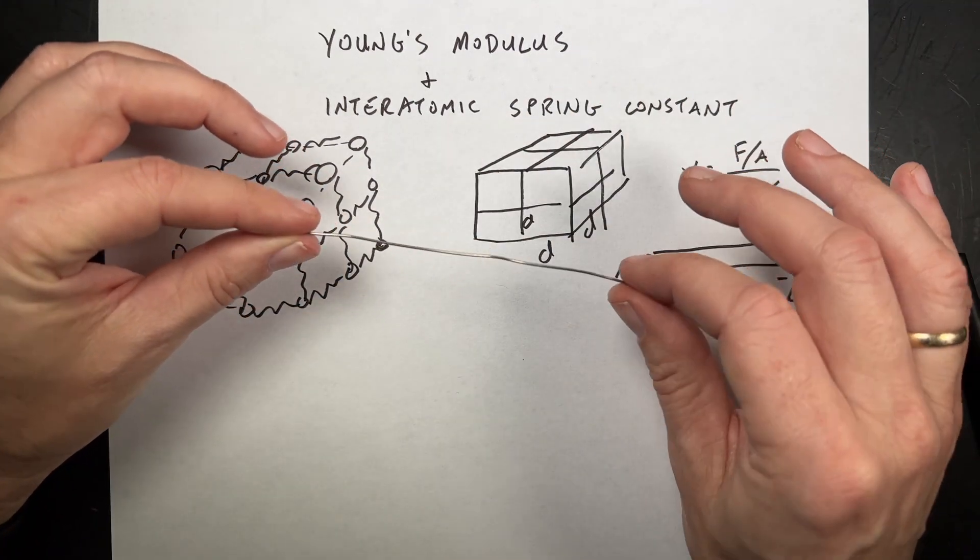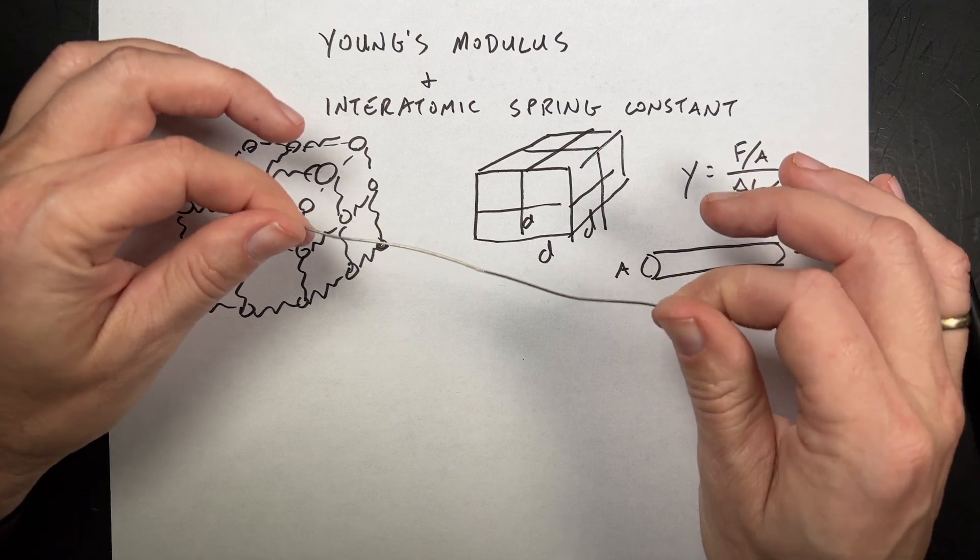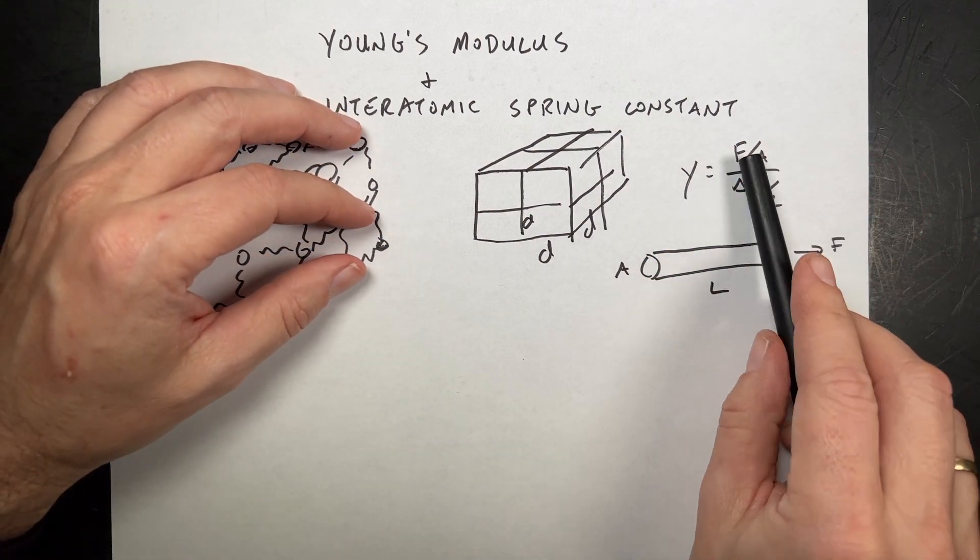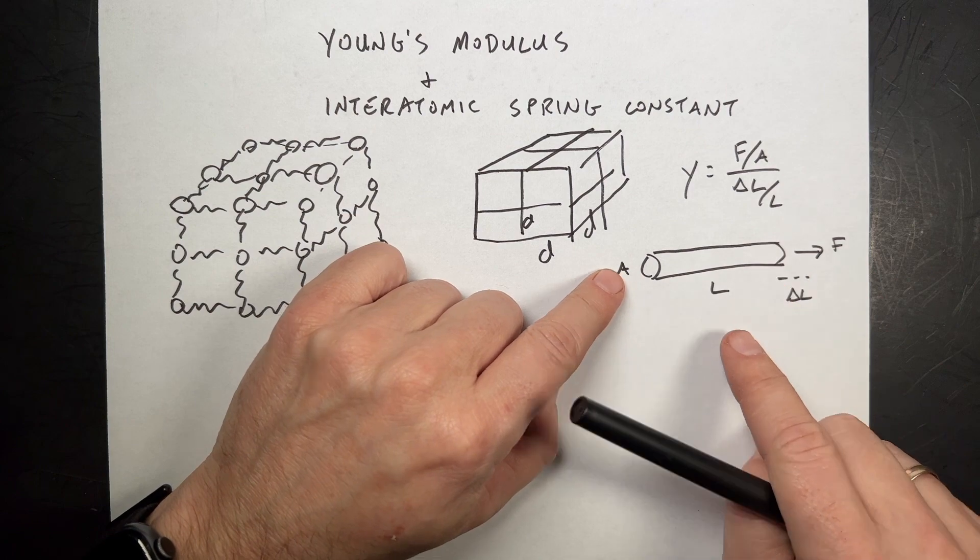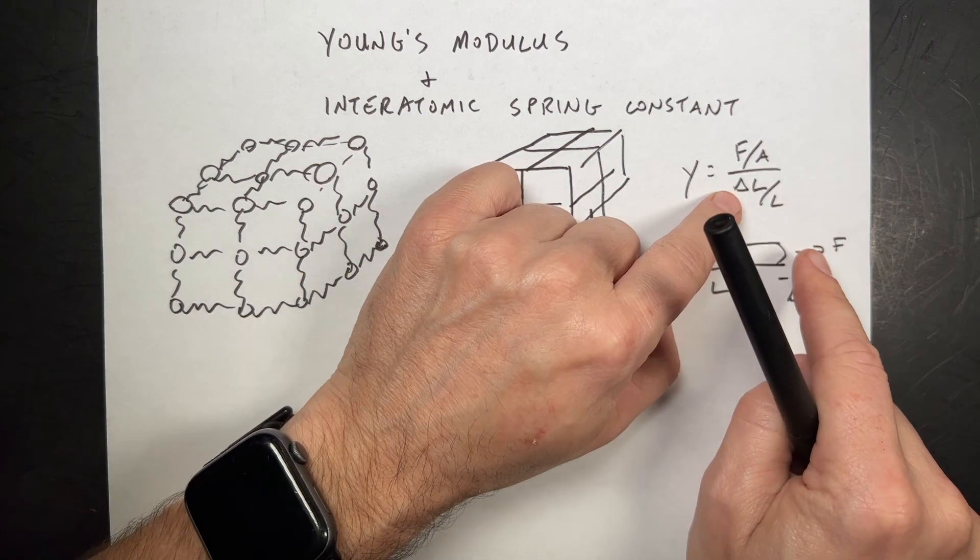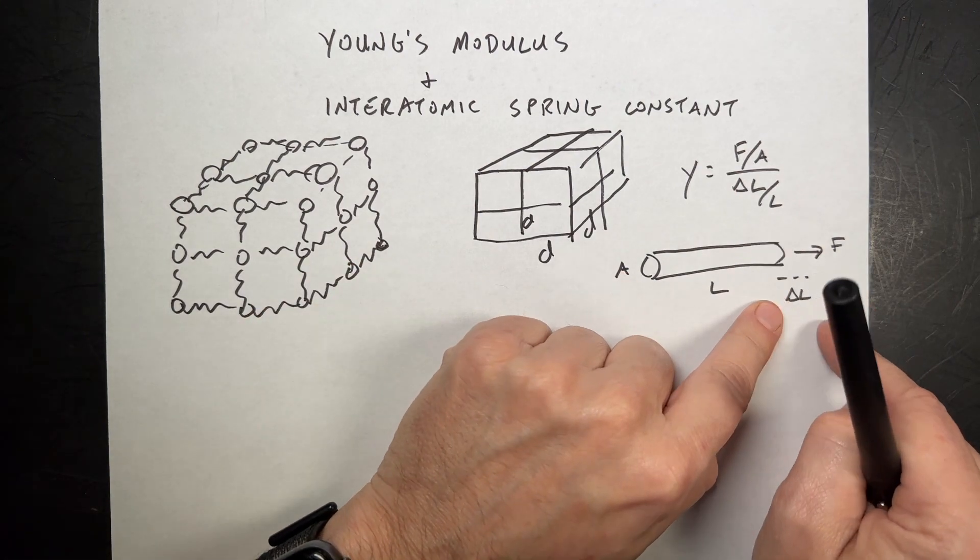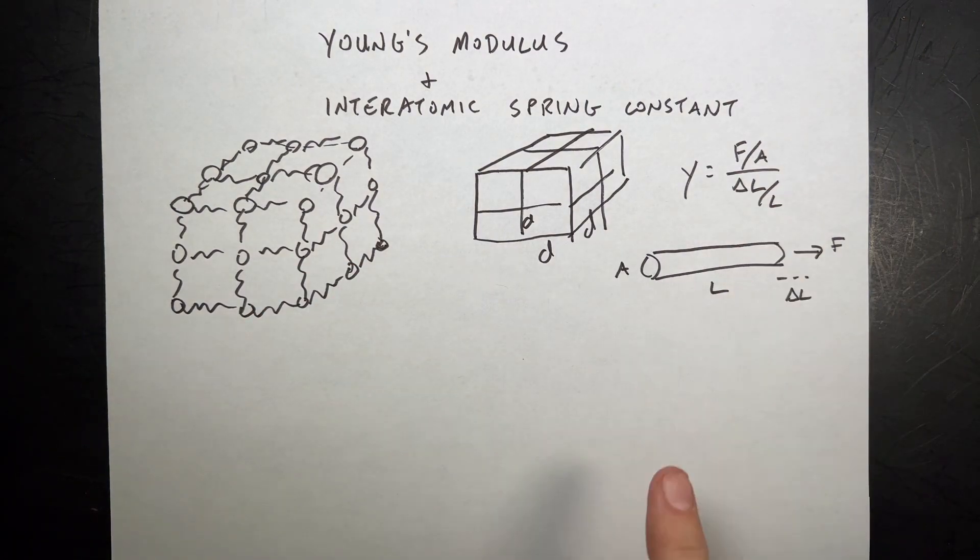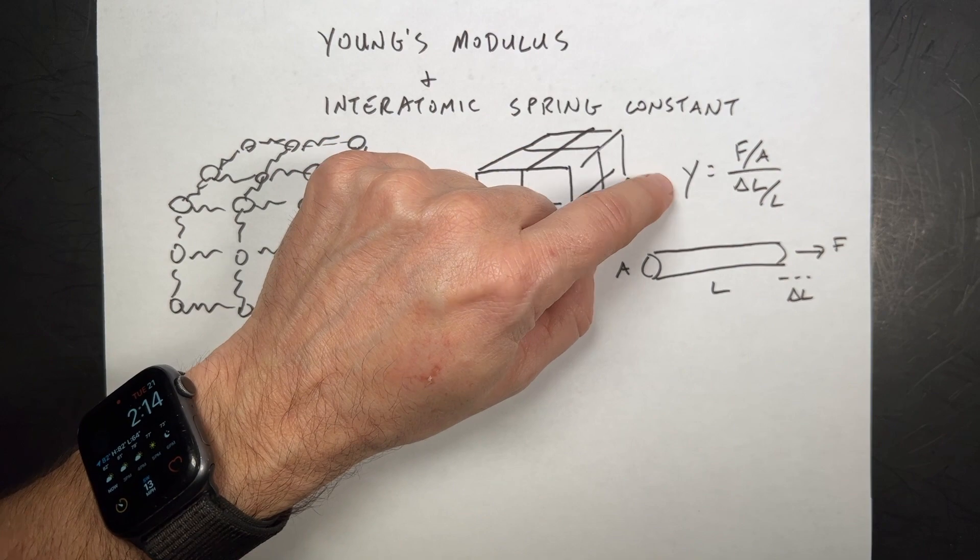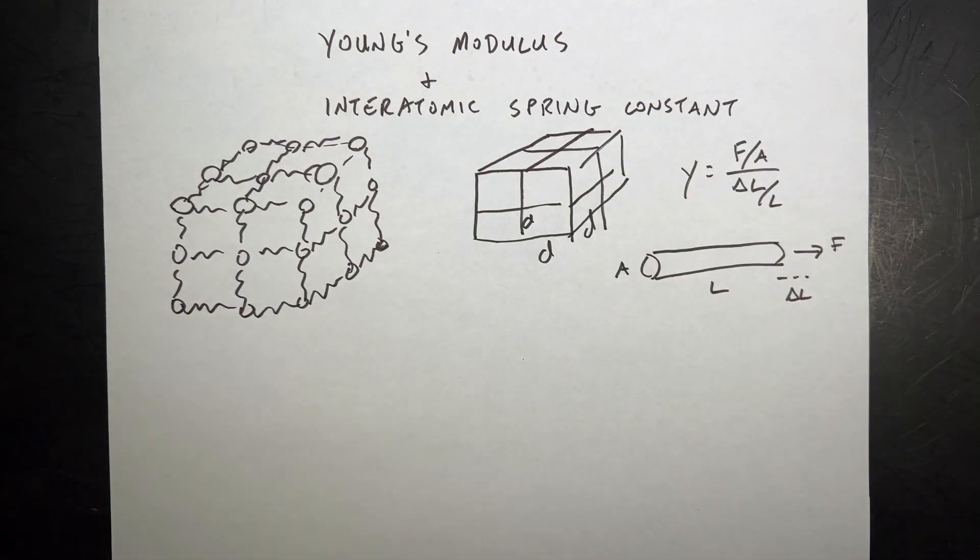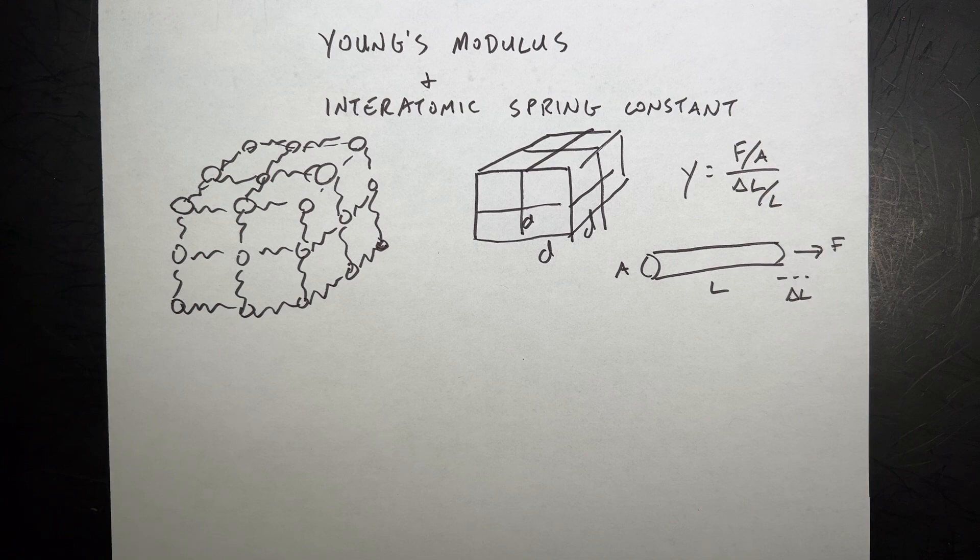Young's modulus tells us the stretchiness of this material independent of its actual dimensions. We define Young's modulus Y as the stress over strain, where stress is the force applied to a wire divided by the cross-sectional area of the wire. And then we divide that by the strain, which is the change in length delta L divided by the total length. This would be the same no matter what kind of wire you have, as long as it's the same material. It's a property of the material. If that was an aluminum wire, I think it's nickel, that was nickel wire, then we can find properties of the nickel.